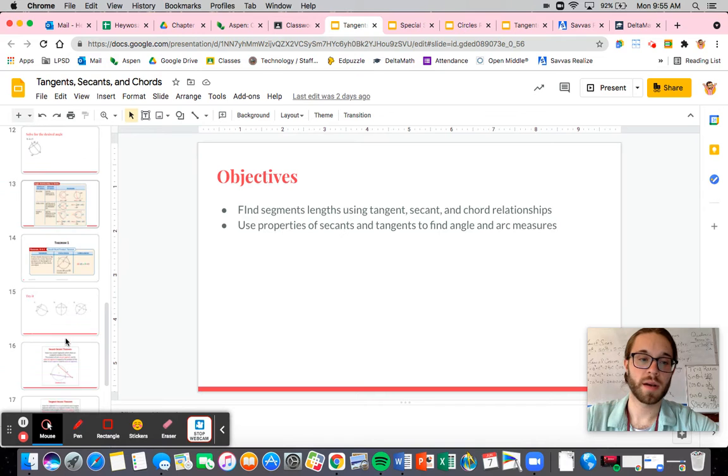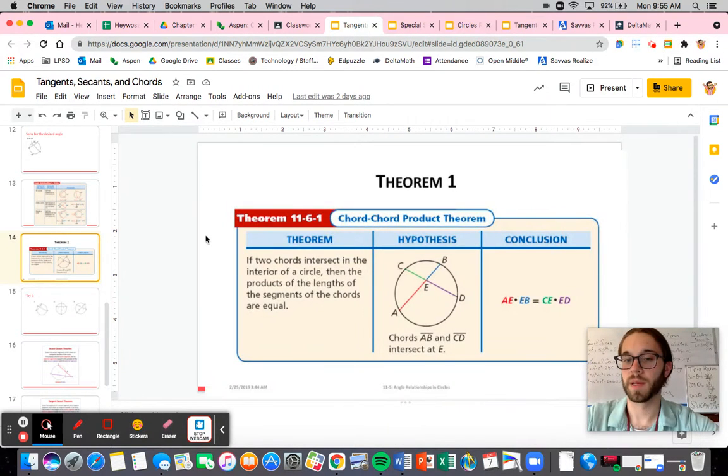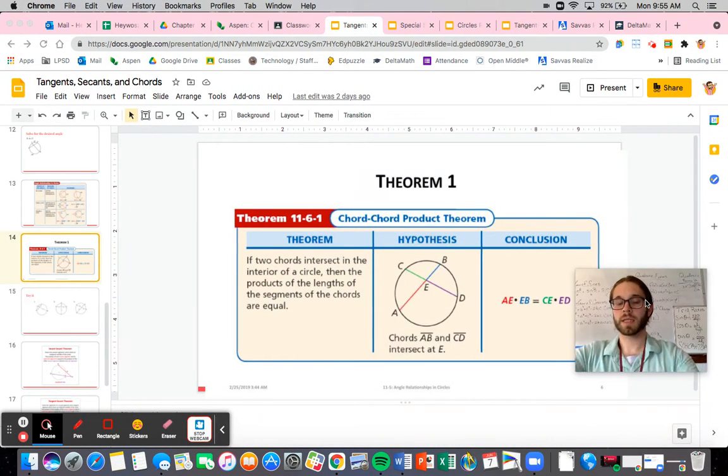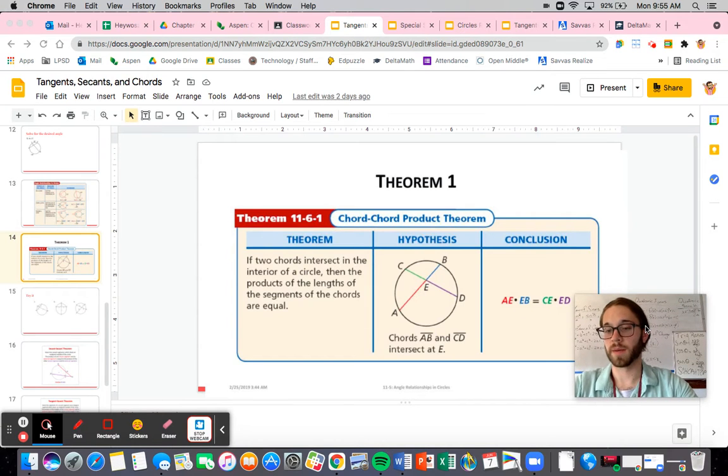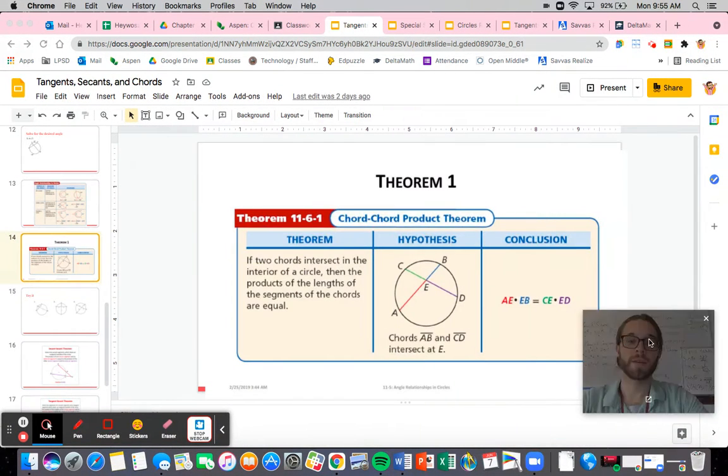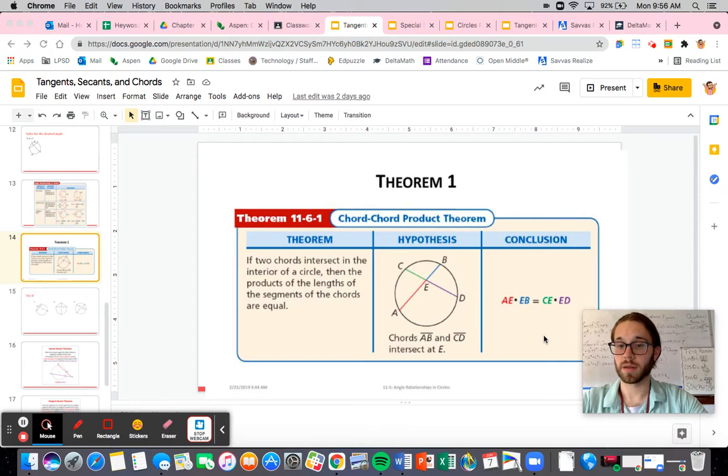We're going to start off by looking at this theorem. This theorem is telling us that if we have two chords that intersect inside of a circle, then the product of the lengths of the segments will be equal. What's it saying? If we have two chords that are intersecting, they're cut into two different parts. You multiply the two parts together, set them equal to each other, and it'll all work out.